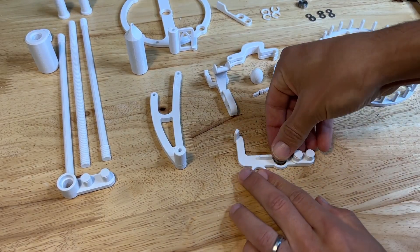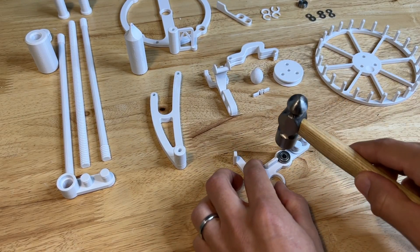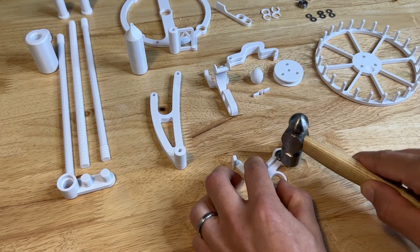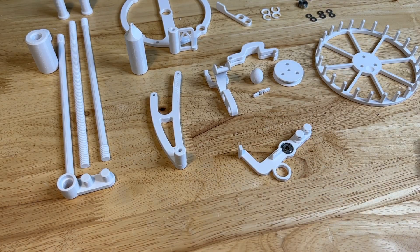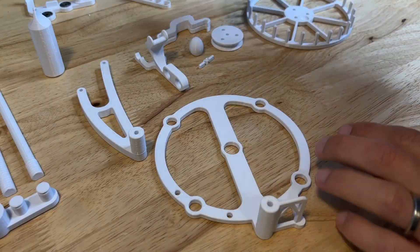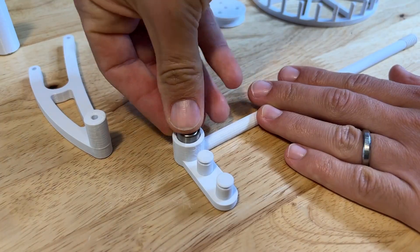Now we're going to start adding some bearings to the parts. Press the bearings in a little bit and use your hammer to hammer them in. You don't have to hammer them too hard, just a light tap will get them in there. Add another bearing to the bottom hole on the trigger and one bearing to the center of the base and then one bearing into the pendulum.